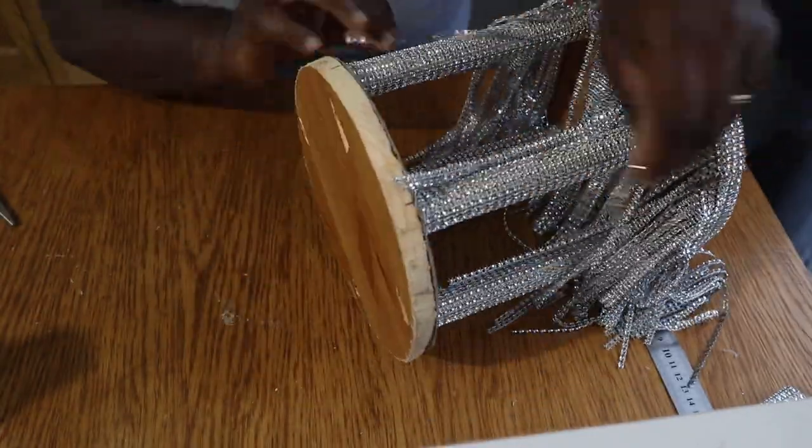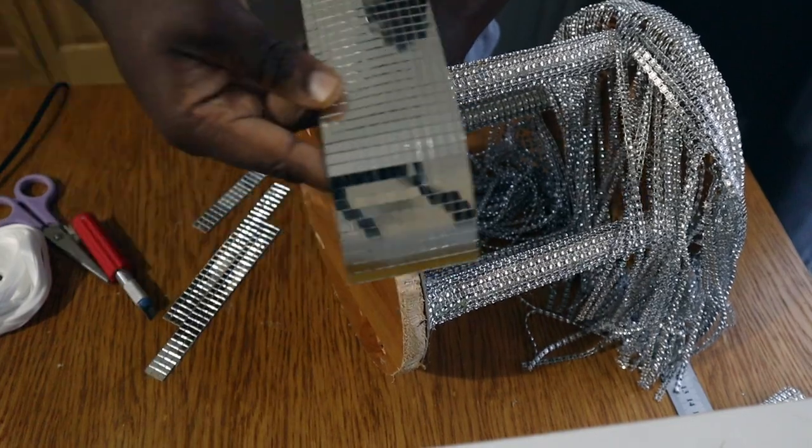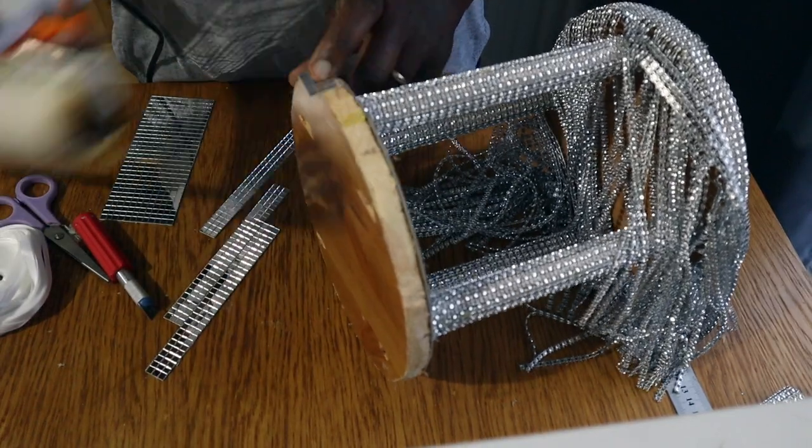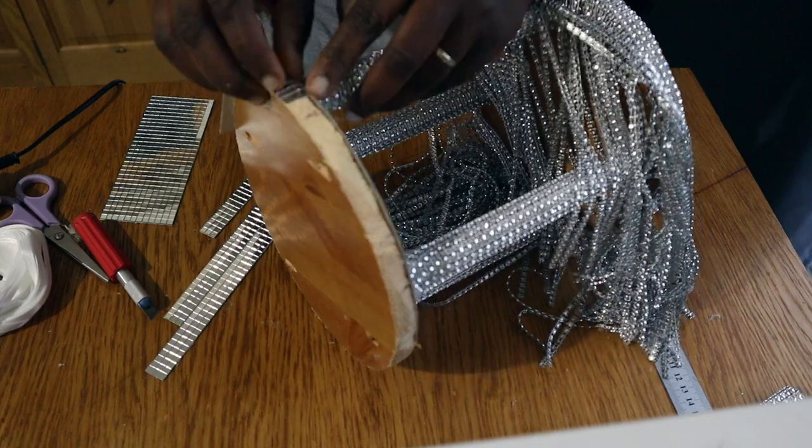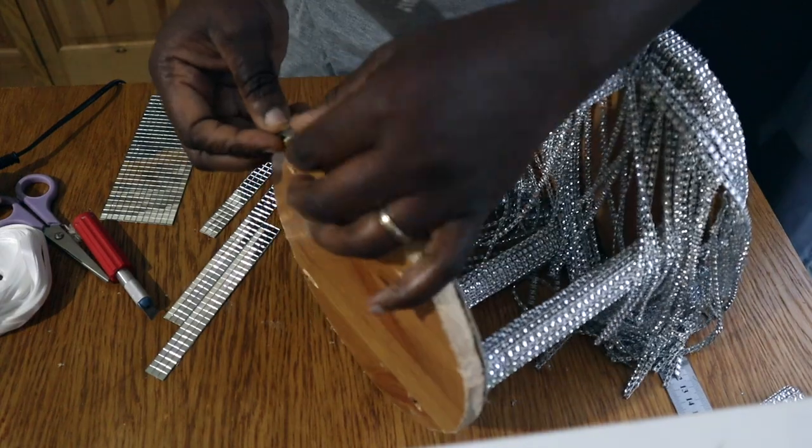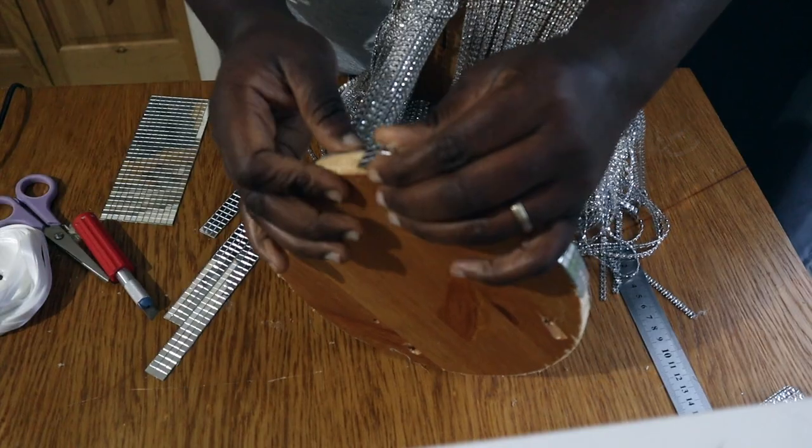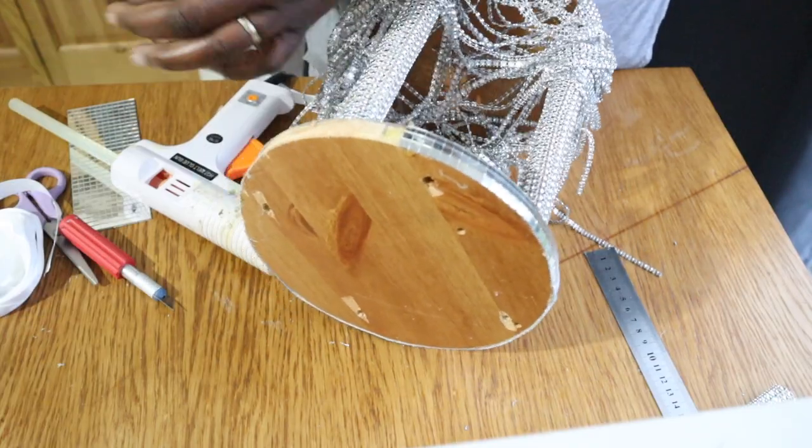Finally, I attached mirror mosaic tiles to the bottom of the gazebo to finish it up. These tiles are self-adhesive as I mentioned earlier on in this video, so I'm only applying hot glue to the beginning of the strip and the end of the strip.